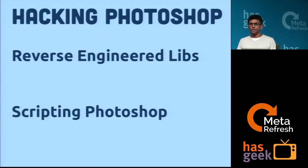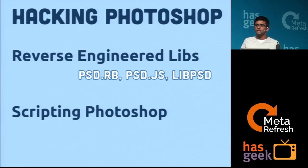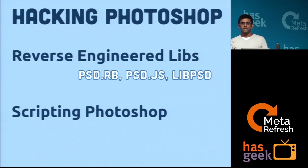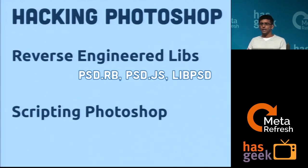So how can you actually hack Photoshop? There are two ways to do it. One is to use reverse-engineered libraries — language-specific libraries like psd.rb for Ruby, psd.js which is a Node.js-based library that we used extensively, and libpsd. All these libraries read through the Photoshop file format and give you information, but most of it is read-only — you get a hash of the entire layers or layer sets.